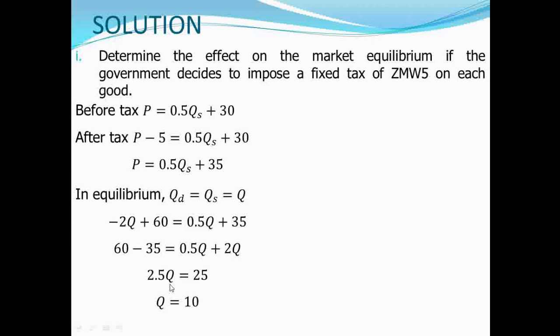Now we have our equilibrium quantity after the imposition of a tax. To find the equilibrium price, we plug this quantity into either the demand function or the new supply function. Note: we are using the new supply function that incorporates the tax, which is P equal to 0.5QS plus 35. Let's start with the demand function and then verify the equilibrium price using the new supply function.